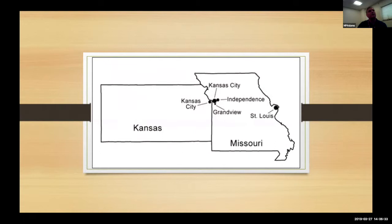Truman worked and lived in both Kansas City and Independence. Also on the map for context is St. Louis, clear on the other side of Missouri, and Grandview — Truman worked on the family farm there for about 11 years. The few times he does not live in Independence are when he's in Grandview, or in Washington DC as a senator, vice president, or president. He was actually born in Lamar, Missouri, in the southwest portion of the state, but he moves to Independence around kindergarten age. His mother moved him there for the public schools, and that's where our story really starts.